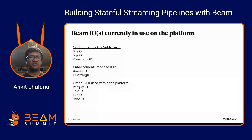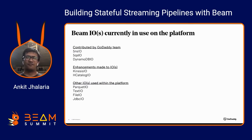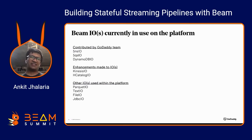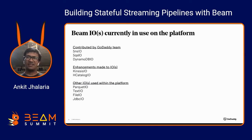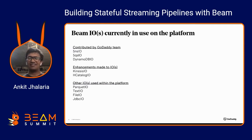These are the IOs we currently use in production. When we started building stateful pipelines about two and a half years ago, SNS, SQS, and DynamoDB IOs weren't available in Beam. We developed those internally and worked with the Beam community to open source them. We contributed these IOs back, made enhancements to HBase IO and Kinesis IO, and also use Parquet, text file, and JDBC IOs. The Beam community is quite active, and contributing IOs back has been very rewarding.